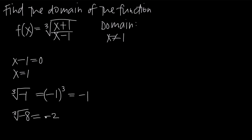For example, the third root of negative 8 equals negative 2, because negative 2 times negative 2 times negative 2 gives us negative 8. So we can take the third root of a negative number even though we can't take the square root of a negative number. Because of that, there's no restriction on the value inside the square root sign — this fraction can be positive or negative, and we'll be able to take the third root either way. Therefore, the domain of f of x is all real numbers except x equals 1.